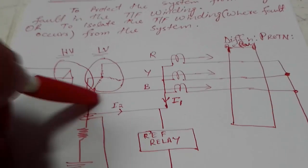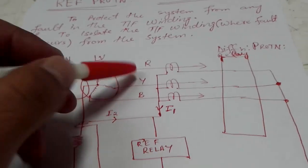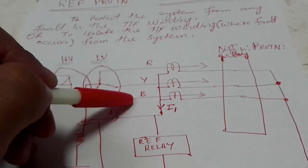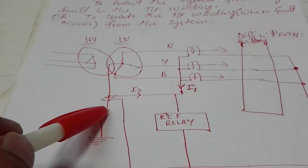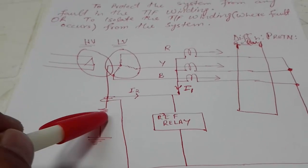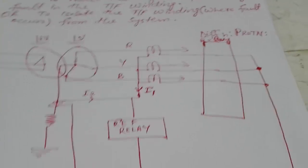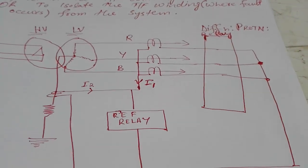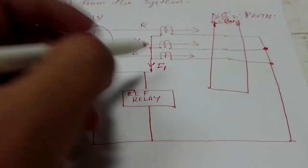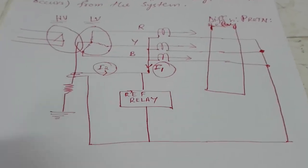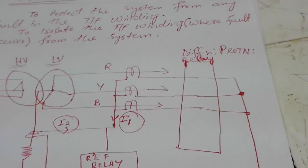For example, we have one delta-star transformer and this is the LV side. Each yellow, blue phase has a separate CT connected to it, and similarly we have one CT connected to the neutral, which is earthed. In normal condition, as we know, there will be balanced flow of current.